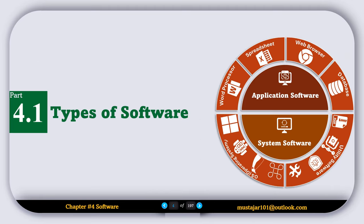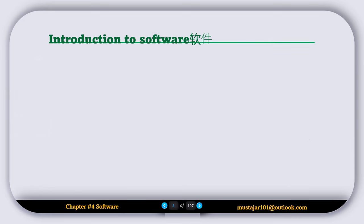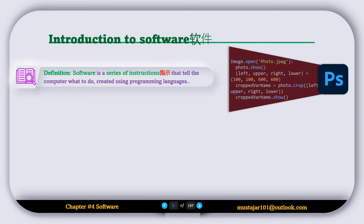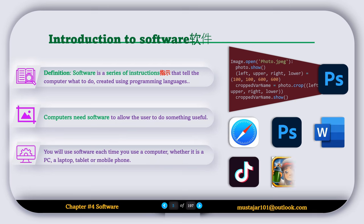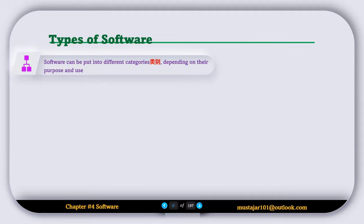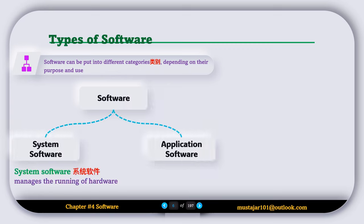4.1 Types of Software. Software is a series of instructions that tell the computer what to do, created using programming languages. Computers need software to allow the user to do something useful. You will use software each time you use a computer, whether it's a PC, laptop, tablet, or mobile phone.